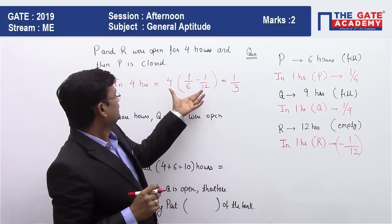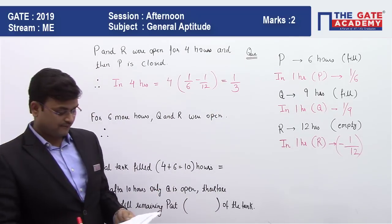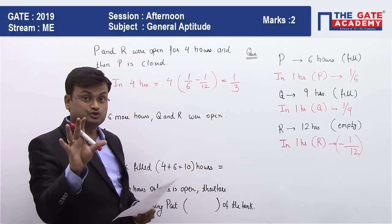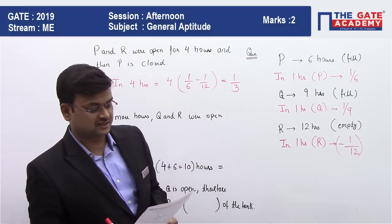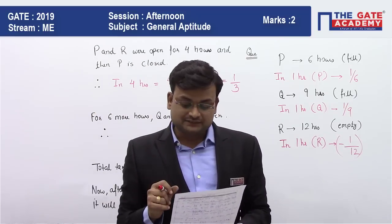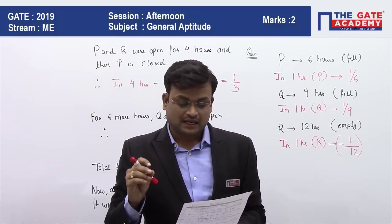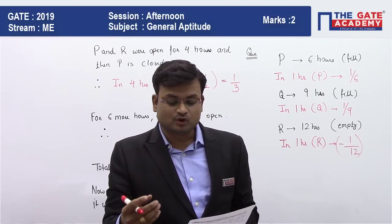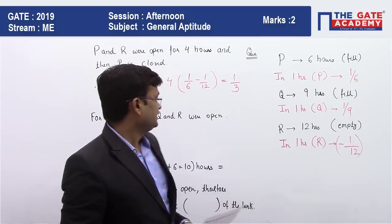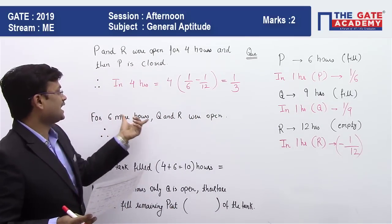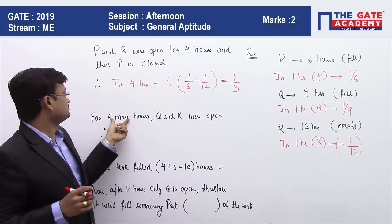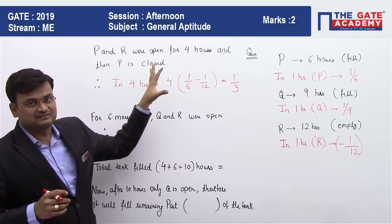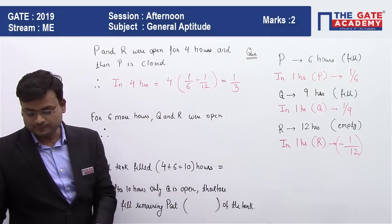It will come as one by three. Now this one by three means one third part of the tank has been filled in four hours, so thirty-three percent of the tank has been filled in four hours. After that, P is closed and Q is open. After six more hours, R is closed. This more word is very important. For six more hours, Q and R were open since P is already closed after four hours.